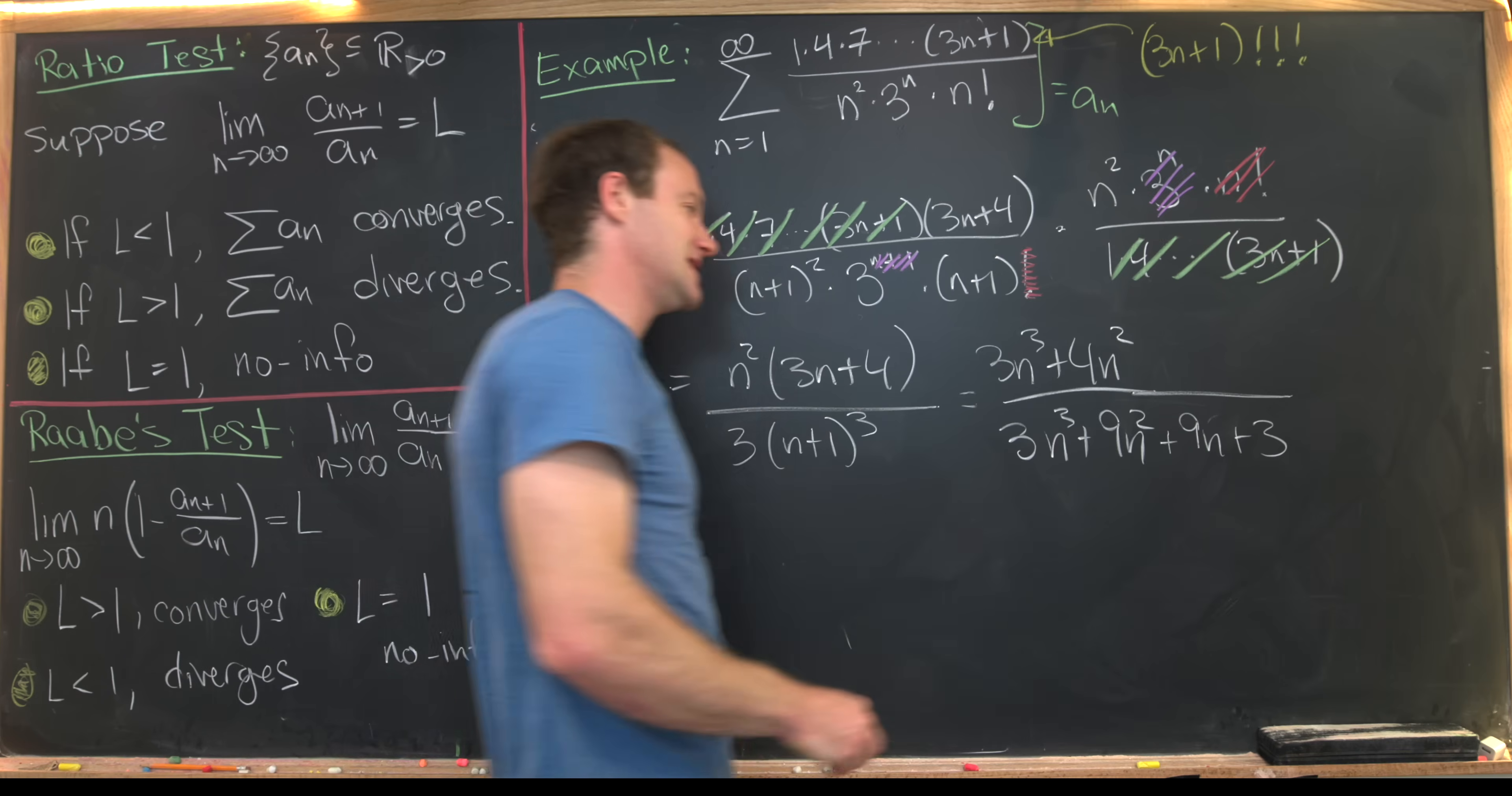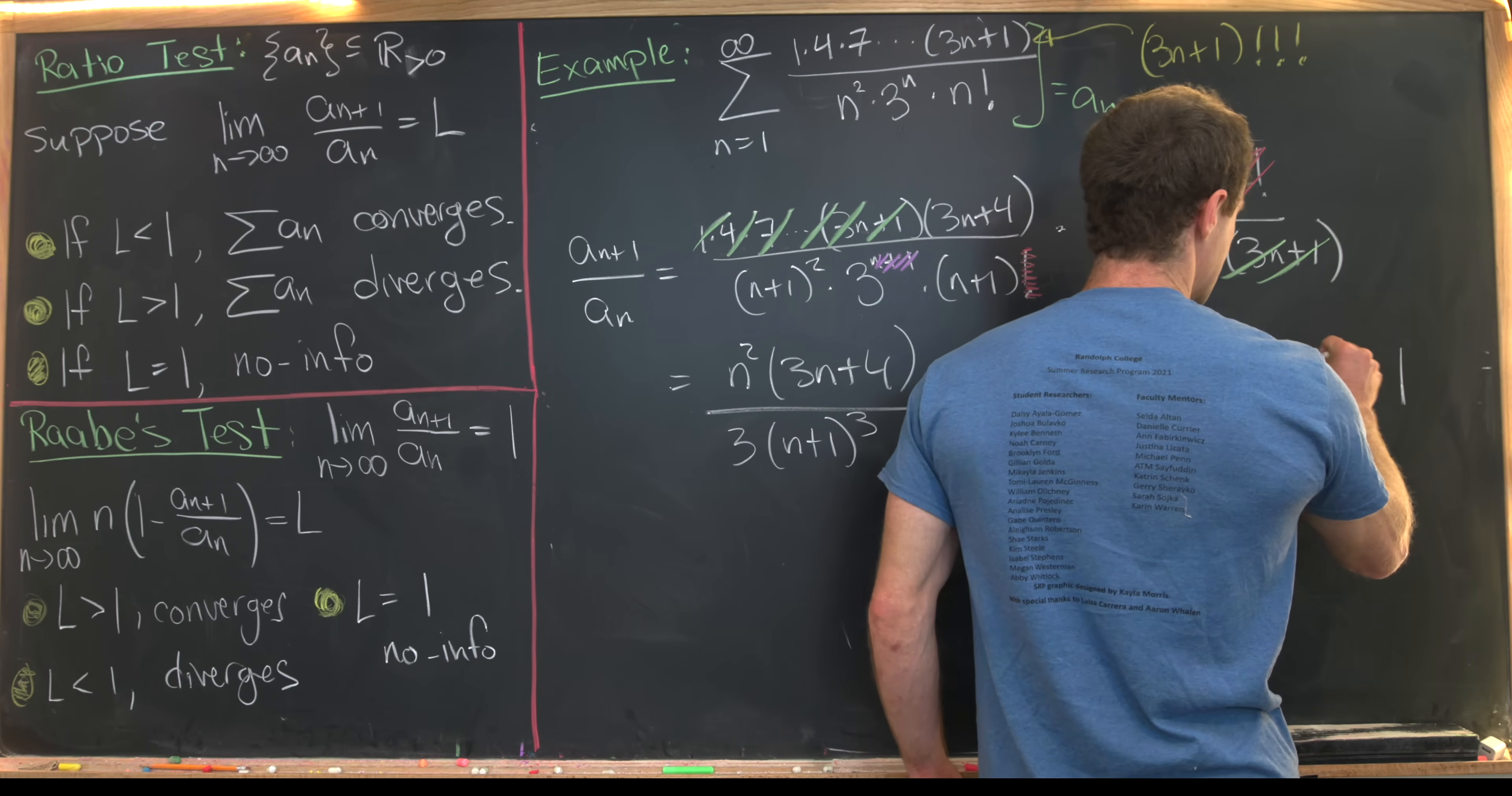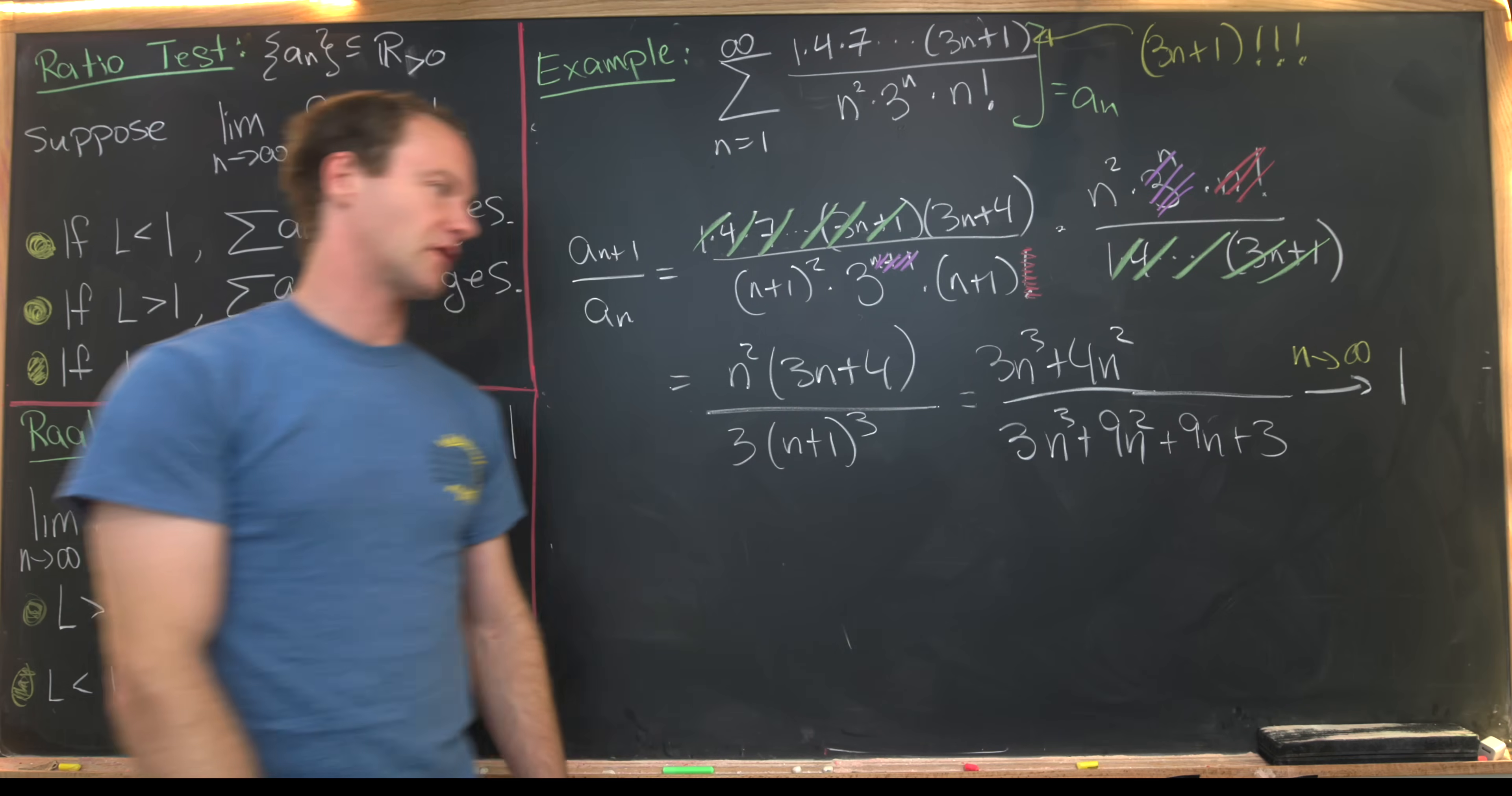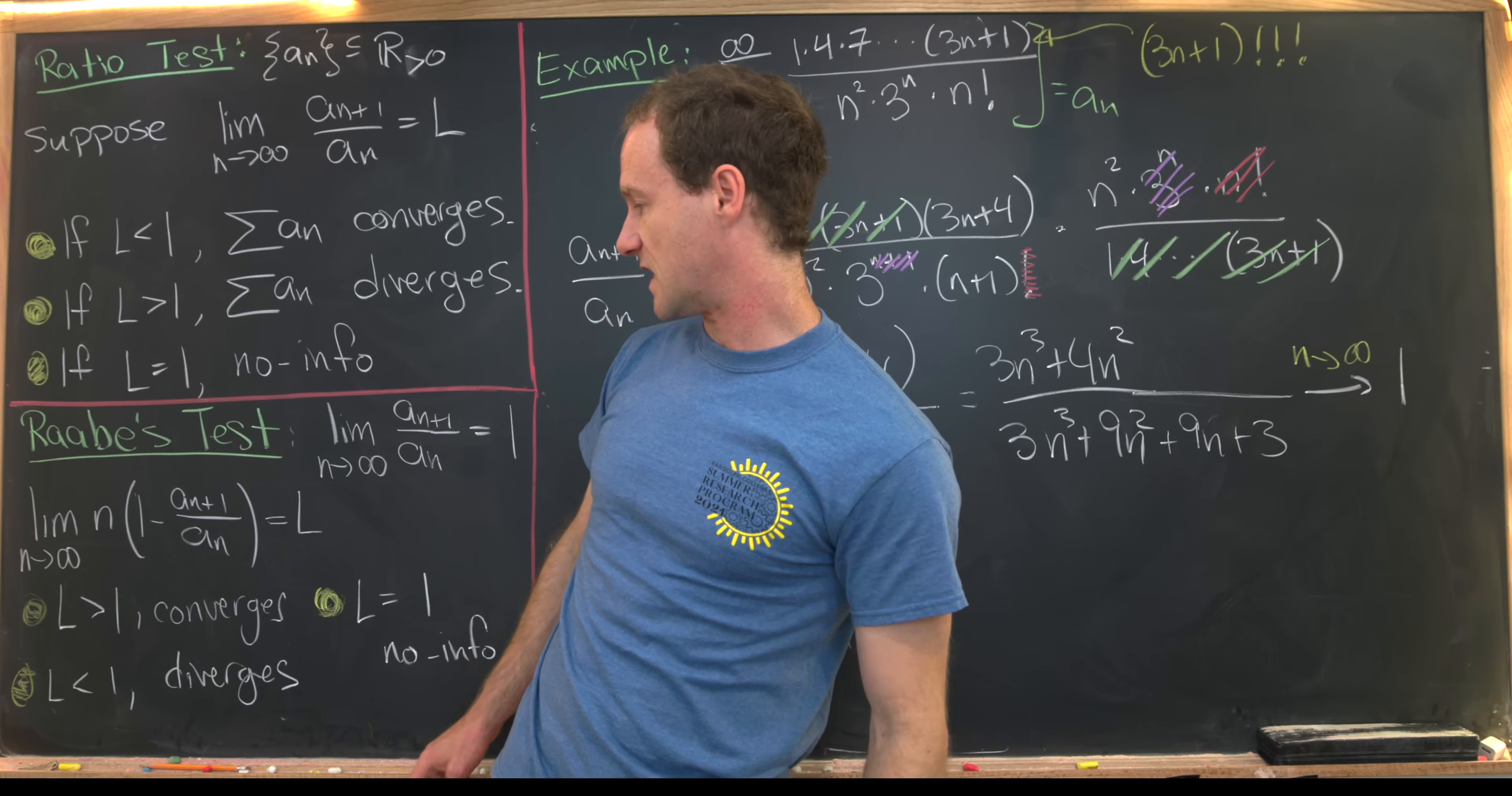So notice that as n goes to infinity, this clearly tends towards 1, just given the fact that we've got a rational function in n. Okay, so that means we're set up to use Raabe's test.